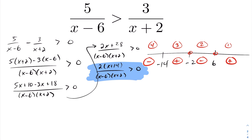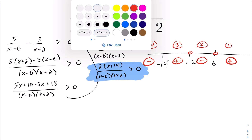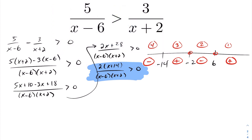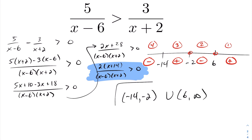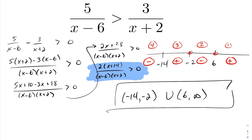The reason the signs oscillate is that the multiplicities at six, negative two, and negative fourteen — the vertical asymptotes or roots — are all odd. Had the factor been raised to an even power, say a power of two on the x plus fourteen, the sign would have bounced off that root and stayed positive. Since we want the expression greater than zero, the answer is from negative fourteen to negative two, union six to infinity.